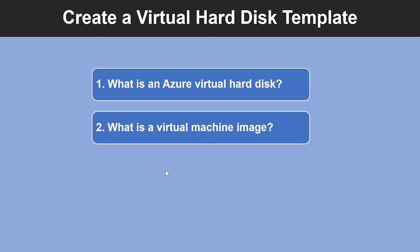Now let's understand what is a virtual machine image. Azure Marketplace supplies many virtual machine images that you can use as a starting point for your own systems. You would be able to find various versions of Windows Server, optionally with SQL Server installed, or Linux variants of software such as MySQL, MongoDB, Cassandra, and other databases, which are already configured.